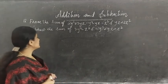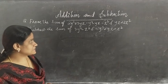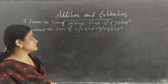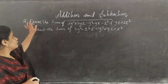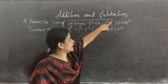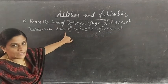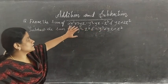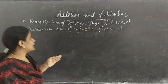The next question: from the sum of 2y² plus 3yz, negative y² minus yz minus z², and yz plus 2z², subtract the sum of 3y² minus z², and negative y² plus yz plus z². First we find the sum of the three expressions, then the sum of the two expressions, and after that subtract both.